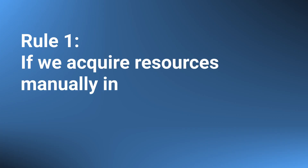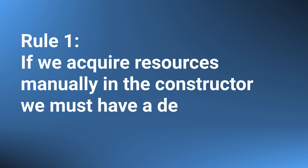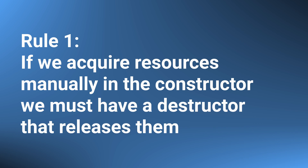Now that we're done with the preparations, I would like to focus on the destructor. What happens if it's missing? Right now, when an object is created it allocates memory, and when it gets destroyed it frees this memory. If we miss the destructor, FreeMemory will not be called and the memory will stay behind, causing a memory leak. This gives us our first rule: if we acquire resources manually in the constructor, we must have a destructor that releases these resources.